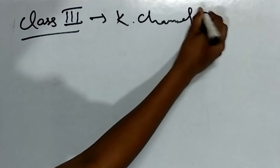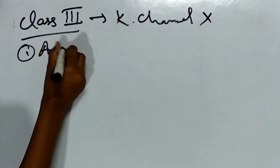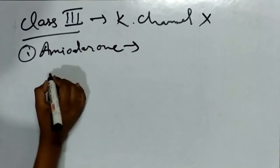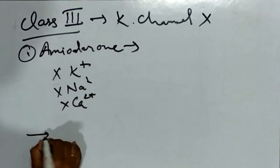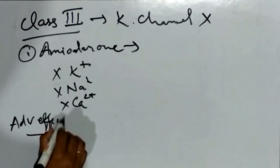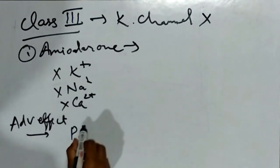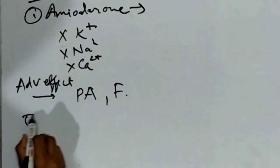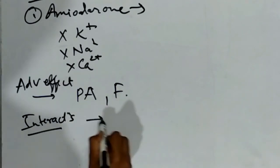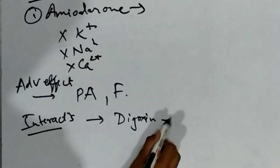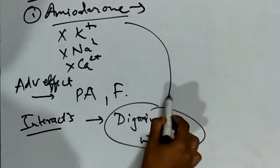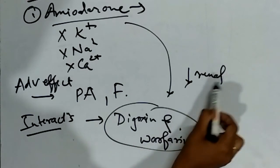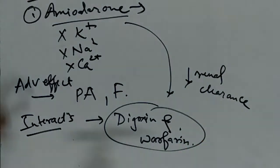Class 3 drugs are potassium channel blockers. The first drug under this class is amiodarone. Amiodarone blocks potassium channels, sodium channels, and calcium channels. The most important adverse effect is pulmonary alveolosis and fibrosis. The interactions are with digoxin and warfarin. Amiodarone reduces the renal clearance of both these drugs.